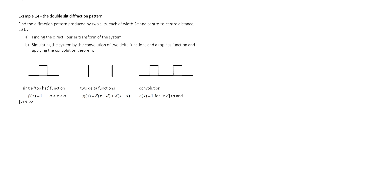In this example we're going to use a Fourier transform to find the diffraction pattern from two slits, and then we're going to compare the result from a calculation where we model the two slits using a convolution of two delta functions and a single top hat function.